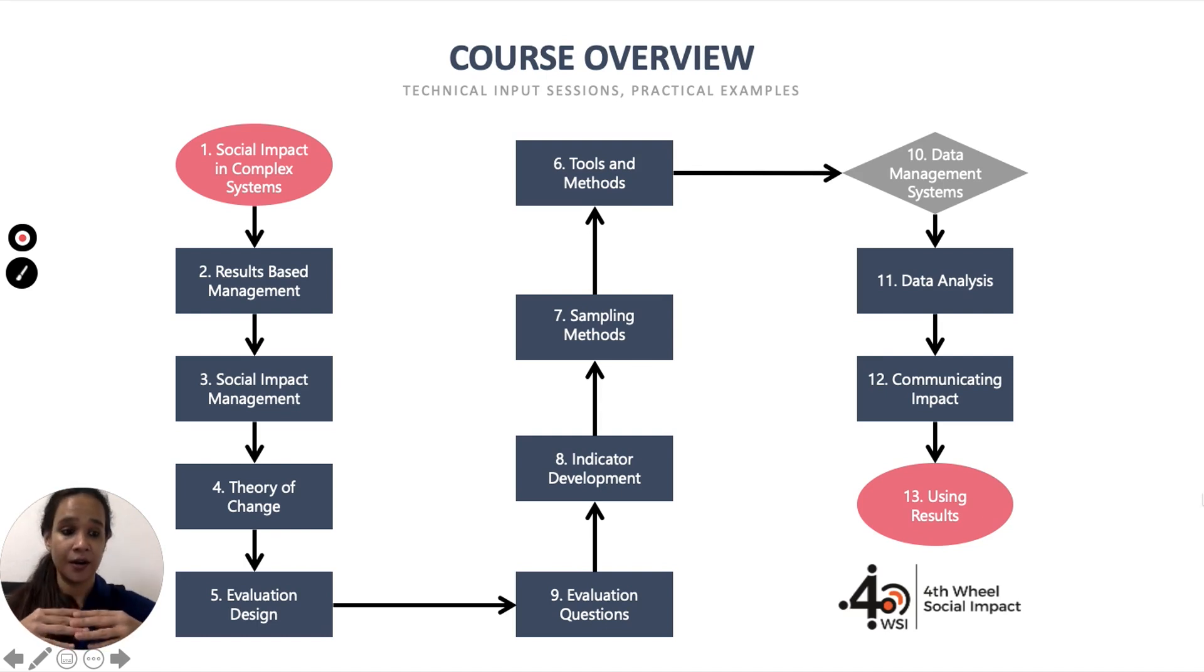Once indicators are clearer and how to get the right SMART indicators, we would then look at sampling methods, how to choose the right respondents for your study, how to ensure that you're using the best fit of sampling methods to ensure you have as many voices heard and a good representation of the people you're talking to.